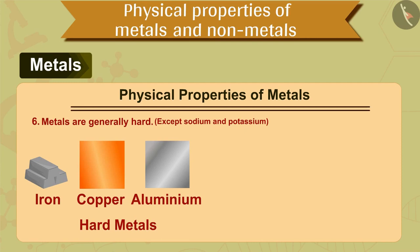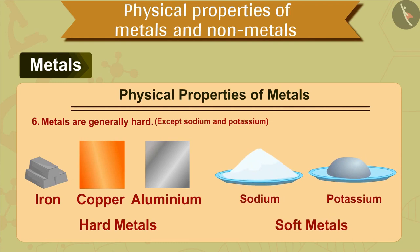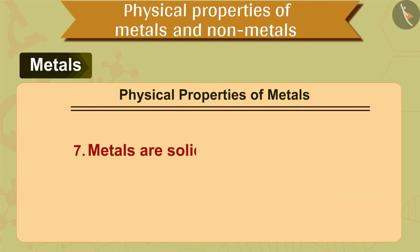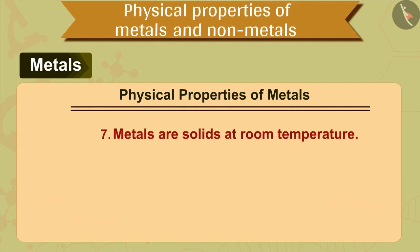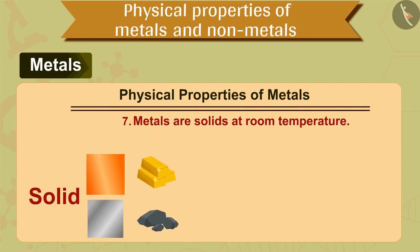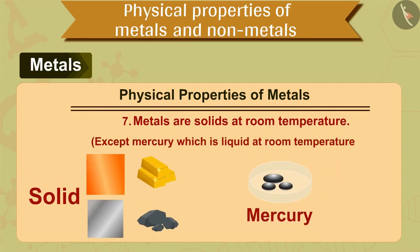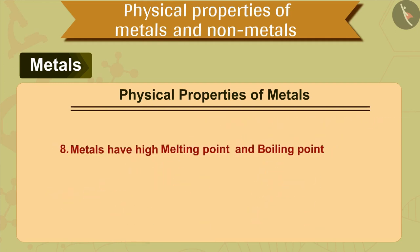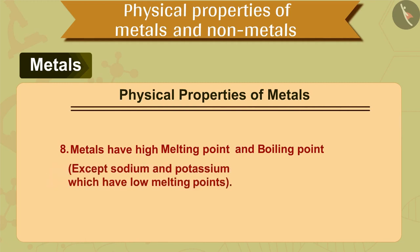Although there are certain metals like sodium and potassium that are very soft and they can even be cut with a knife. The seventh property of metals is that metals are solids at room temperature, except mercury which is liquid at room temperature. Most metals are solids at room temperature and there is only one metal which is liquid at room temperature, which is mercury. The eighth property of metals is that metals have high melting and boiling points, except sodium and potassium which have low melting points.